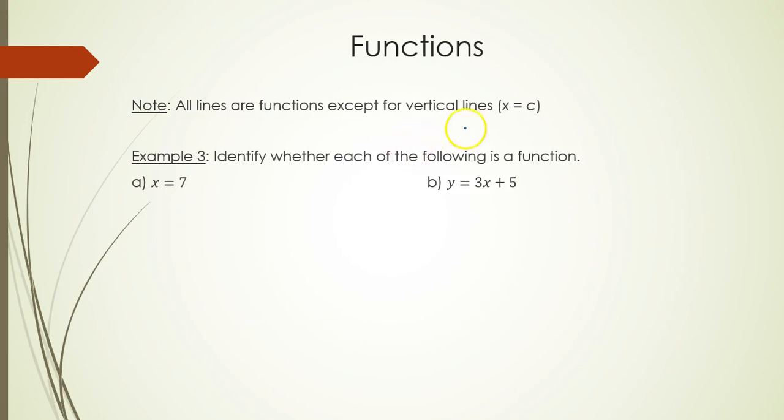Next, all lines are functions except for vertical ones. Those are of the form x equals some number. So in example 3, part a, you have x = 7. This is a vertical line because it's of the form x equals a number, so the answer is not a function.